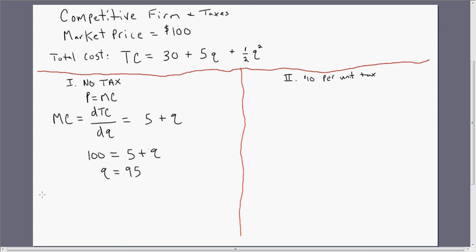It would earn a profit, in this case of total revenue minus total cost. So the total revenue would be the price times quantity, 95. And then we're going to subtract out total cost.